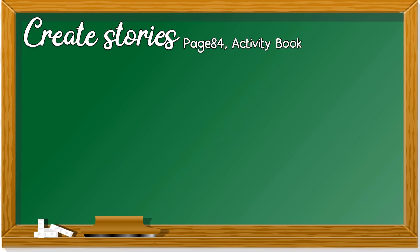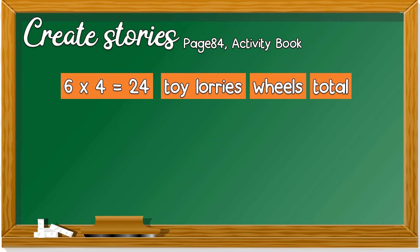Let's take a look at creating stories. Number one, you see the number sentence, 6 × 4 = 24. For toy lorries, wheels, total.